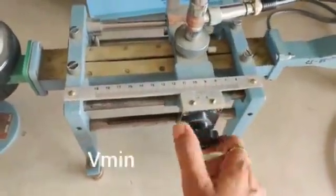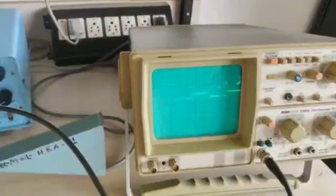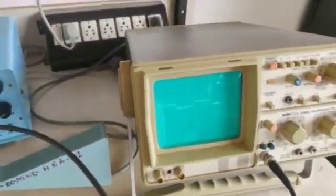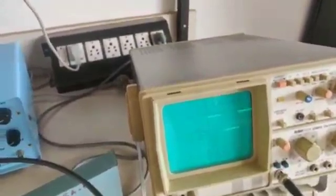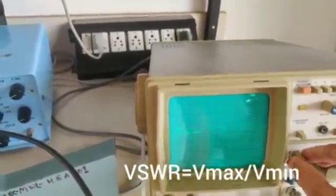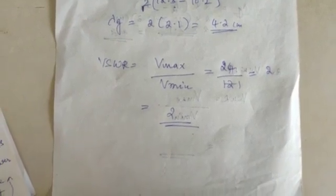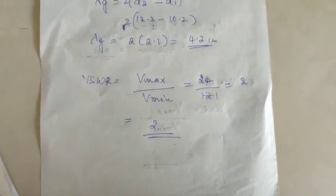And V minimum, we have to move again, and now it is in minimum position. Like this, for the maximum position we should note the first reading, and next for the minimum position we should note down the reading, which is 12. VSWR formula is Vmax divided by Vmin, so 24 divided by 12, that is equal to 2.